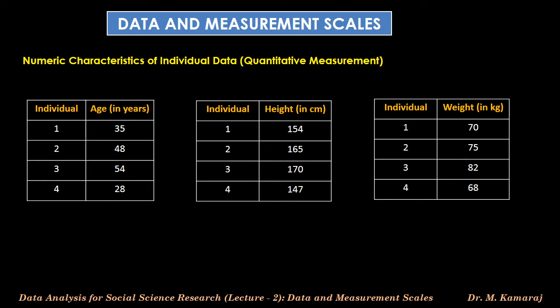Likewise, individuals' weight measurement is also possible through a weighing machine. The respondents' weight in kilograms in that table is given as 70, 75, 82, and 68.